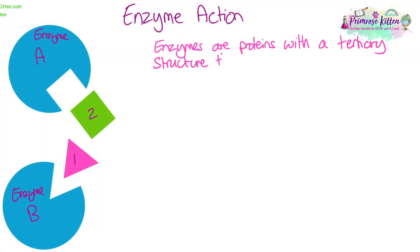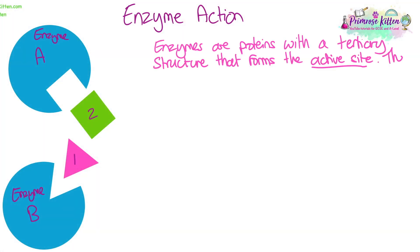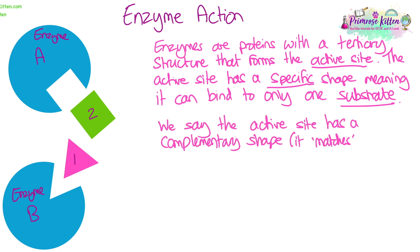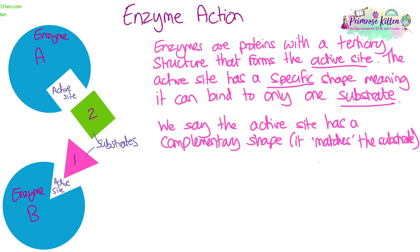Enzyme action. Enzymes are proteins with a tertiary structure that forms the active site. The active site has a specific shape, which means it can bind to only one substrate — so it is specific to that substrate. We say that the active site has a complementary shape, so it matches the substrate. Think about it like puzzle pieces fitting together. Because the shape of the active site is complementary to the substrate, they can bind, and when they bind, they form an enzyme-substrate complex.